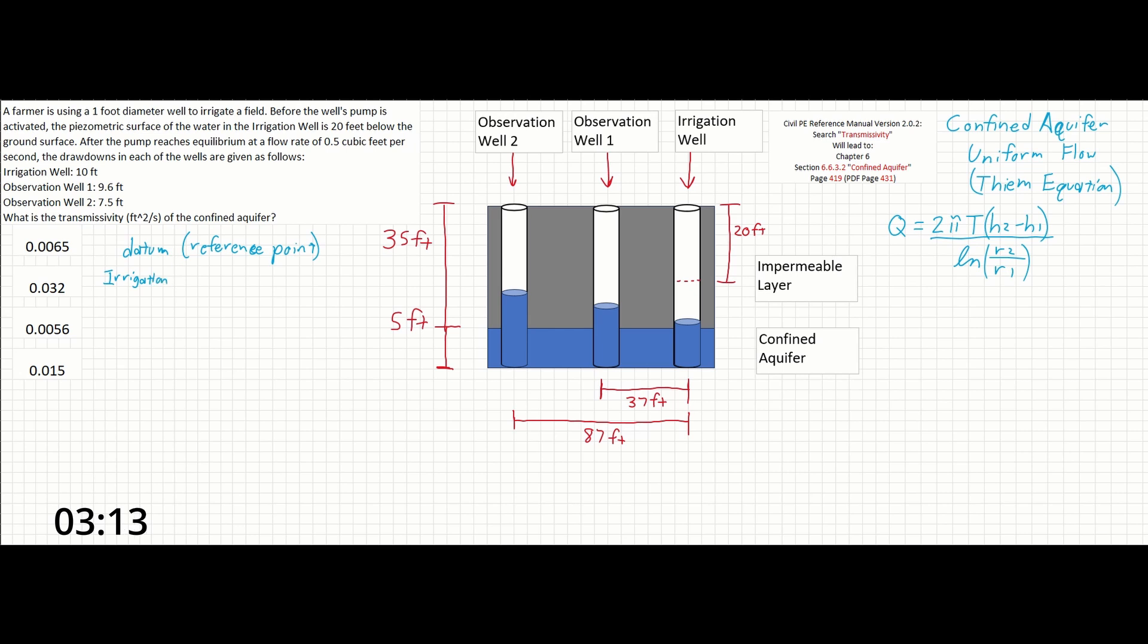To find our datum or reference point first, we have to sum up the 35 feet from the impermeable layer plus the 5 feet from the confined aquifer. Then, we have to subtract the piezometric surface of the water in the irrigation well before the pump is turned on. That will be the initial depth of water in the well.